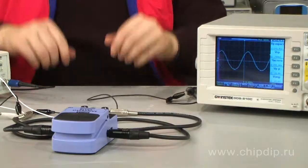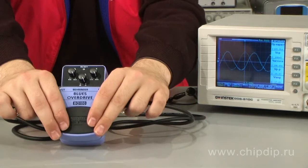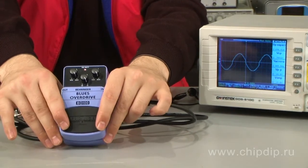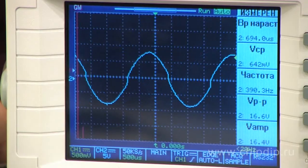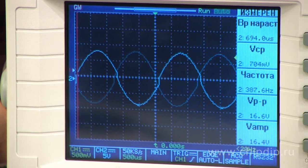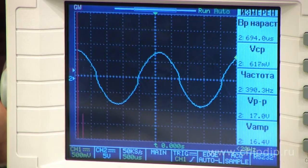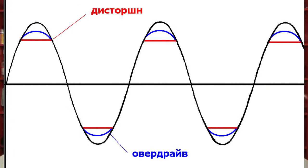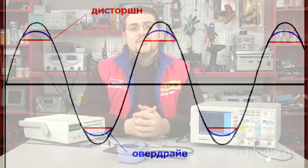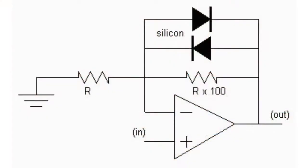In overdrive this limiting is soft, which means that the top sinusoids are cut off with smooth roundings rather than with a straight line, like in the case of distortion. In such soft limiting, the limiting extent is inversely proportional to the level of the input signal. This is usually done by the parallel back-to-back connection of silicon diodes to the circuit inversely to the negative association of the operational amplifier.